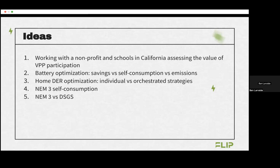The next idea is home optimization. Right now we've got more and more smart devices that are trying to optimize for savings and to participate in grid programs, but they're all participating in silos — they don't talk to each other. What I'd be curious to see is: does it matter if they're working in silos, or would there be additional savings or lower emissions if there was a central orchestration strategy?